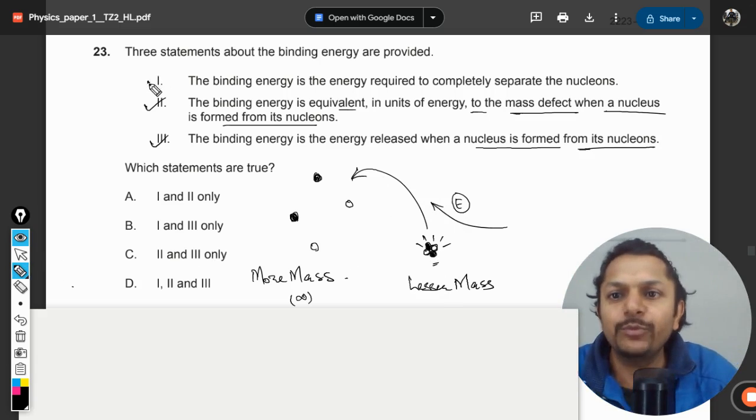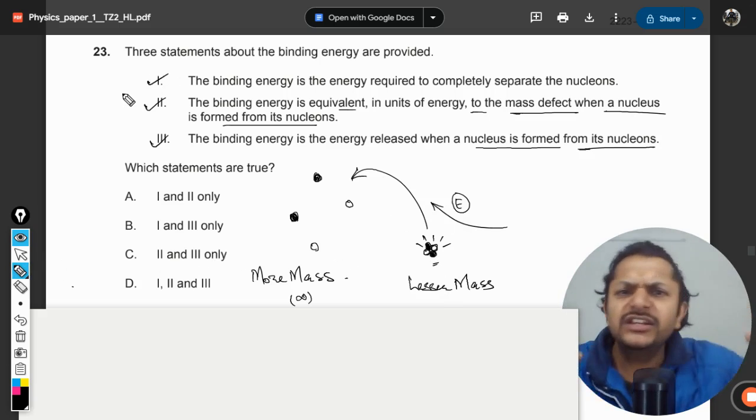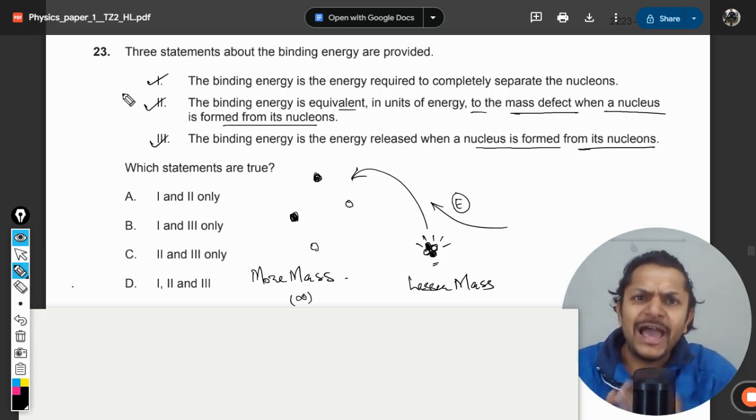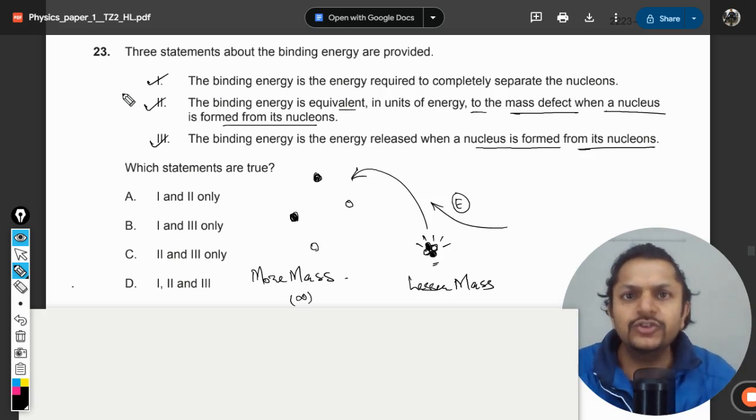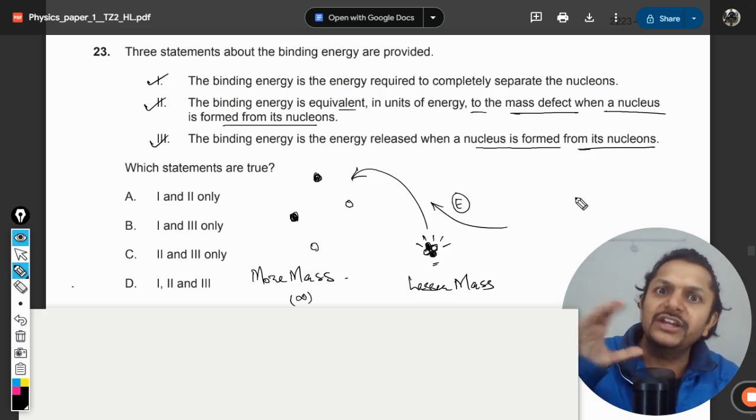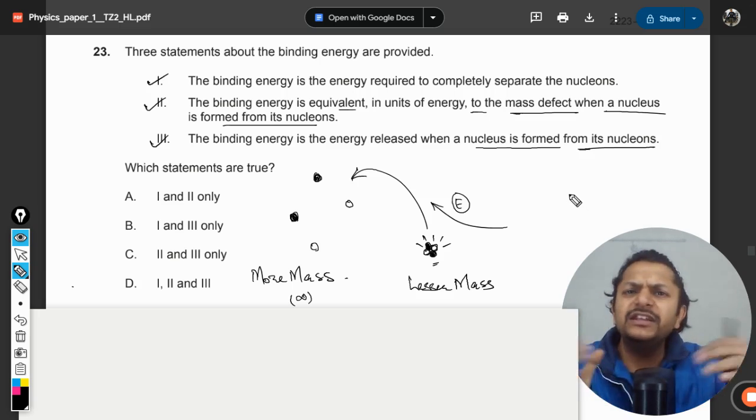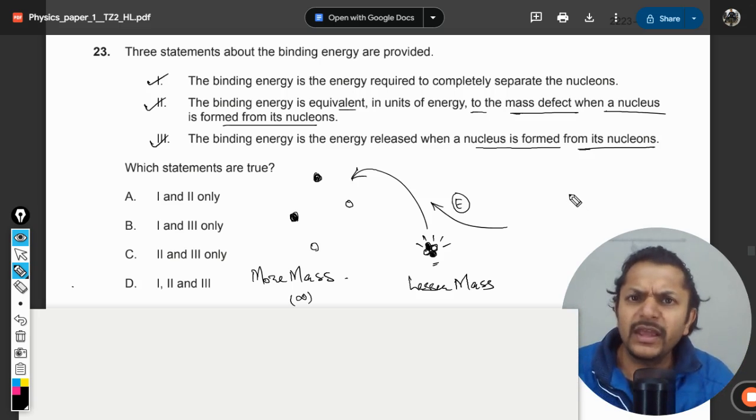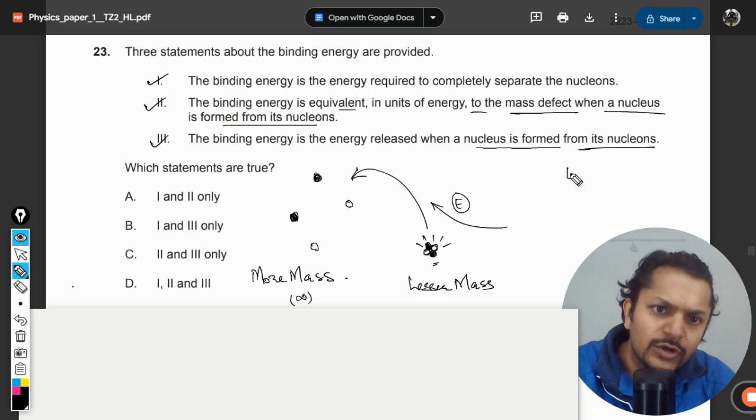So even the point number one is correct. It is just the reverse of that. You can just call it exoergic. Exoergic nuclear reactions are the reactions in which energy is released. Endoergic are the nuclear reactions in which energy is given. So they are basically reverse of each other, nothing more, isn't it? Endoergic and exoergic.